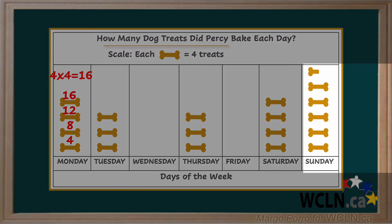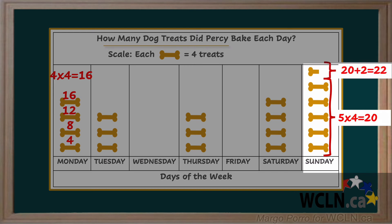Sunday is a bit trickier. There are five full symbols and one half symbol. Since one symbol has a value of four, a half symbol has a value of two. We can multiply five times four, which equals 20. Then we can add the two from the half bone symbol. And we can see that on Sunday, Percy baked 22 treats.